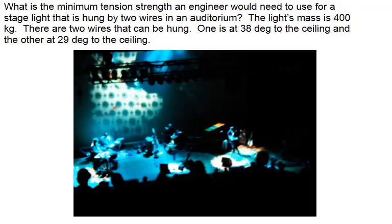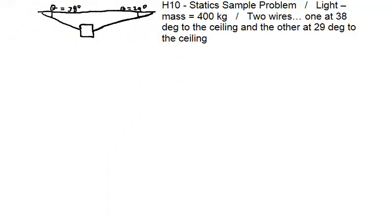In this one, what is the minimum tension strength an engineer would need to use for a stage light that is hung by two wires in an auditorium? The light's mass is 400 kilograms. There are two wires that can be hung. One is at 38 degrees to the ceiling and the other is 29 degrees. So, let's go ahead and draw that. We've got our two wires here, one at 38 degrees, one at 29 degrees.